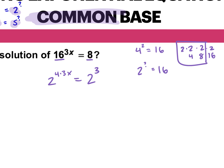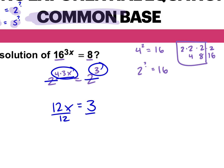Now that our bases are the same, we can cancel them out and set the exponents equal to each other. 4 times 3x is 12x, so 12x is equal to 3. When your bases are the same, cross them out and put the exponents equal to each other. From here it's a basic equation — divide by 12. 3 divided by 12 simplifies to 1 over 4. So x equals 1/4.